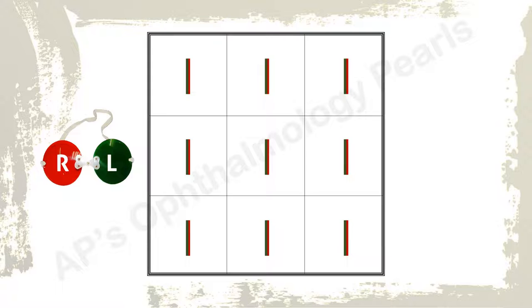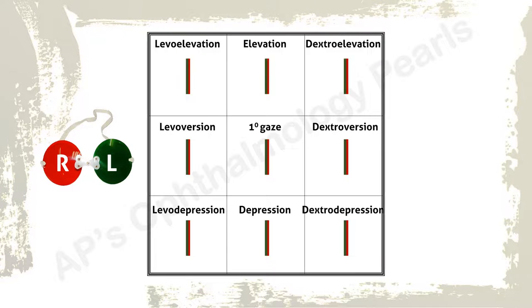Red green goggles are worn such that the red glass is in front of the right eye and the green glass in front of the left eye by convention. In a patient with no diplopia, a single image which is a combination of both red and green is seen in all nine diagnostic positions of gaze. The chart is interpreted from the patient's point of view, so this is dextro elevation, this is levo elevation, and so on.